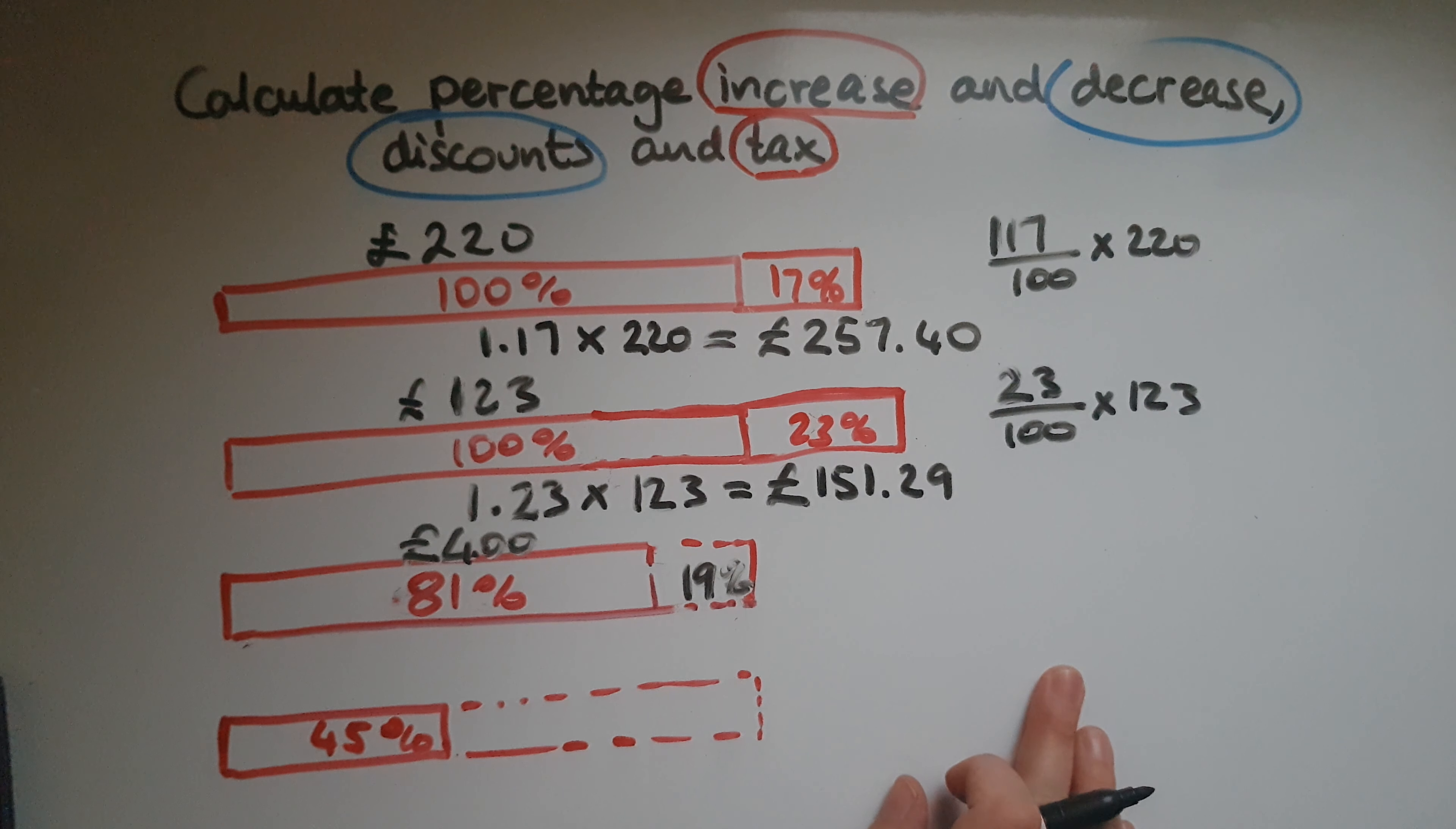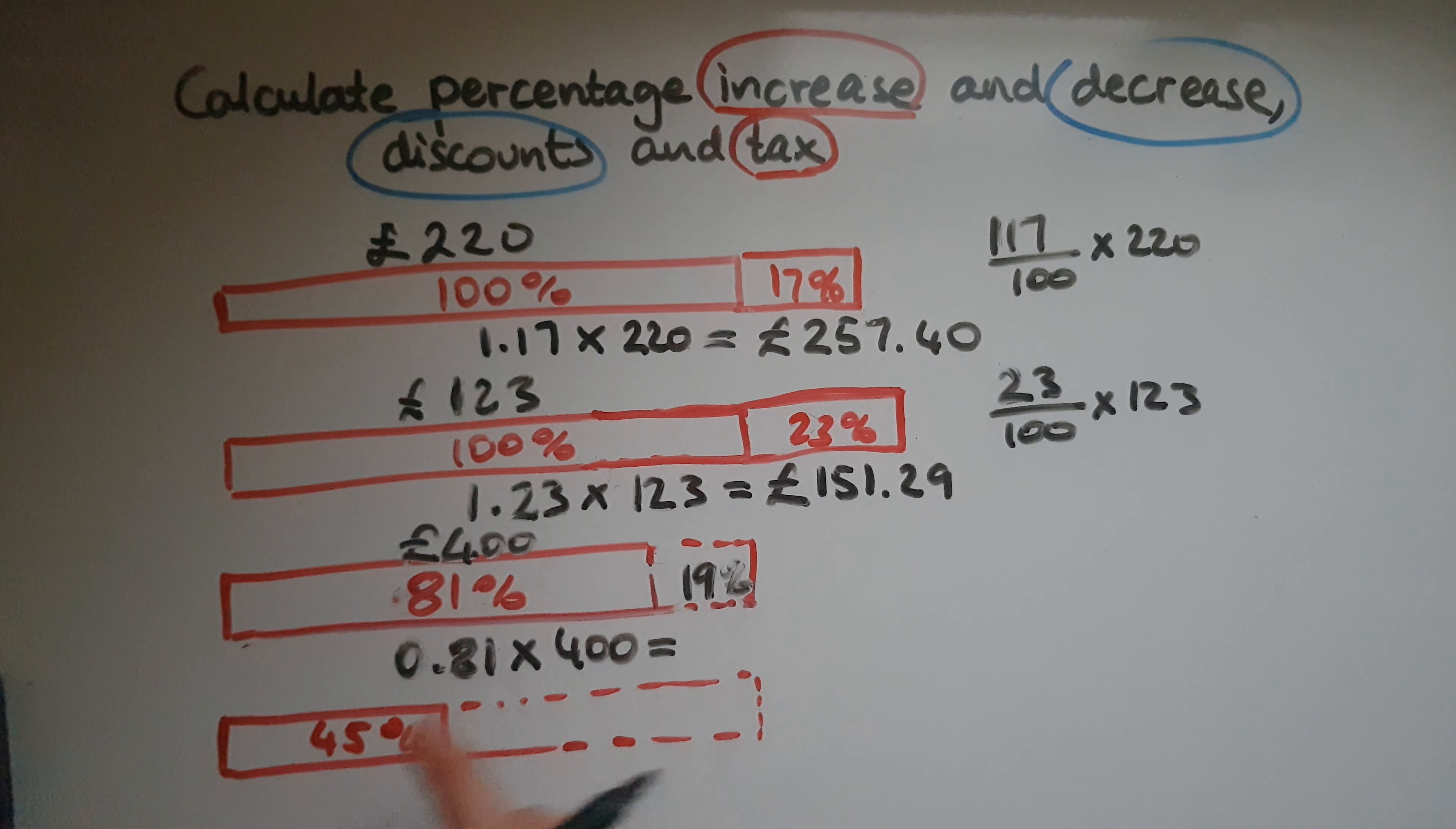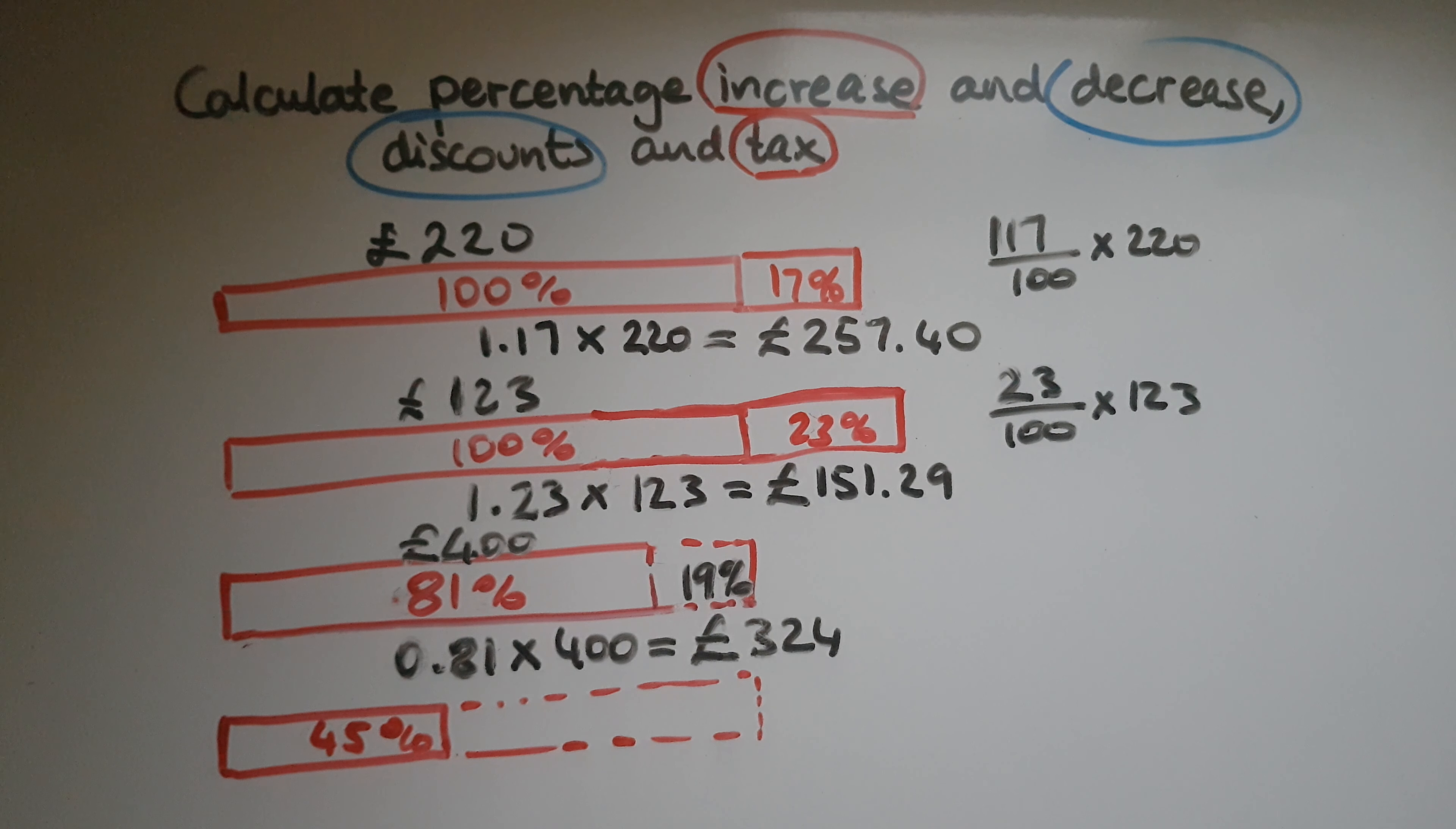So what I can do is I can work out 19% of 400 and take it away, or I can just work out what is 81% of the 400. So 81% as a decimal, 0.81 multiplied by 400, and that should give me this amount. So 0.81 times 400 is equal to £324. So that is the reduced price.